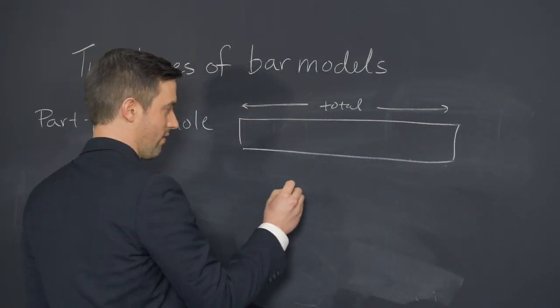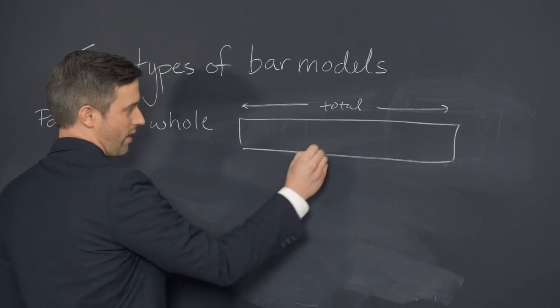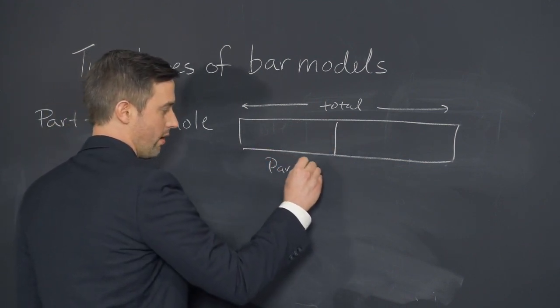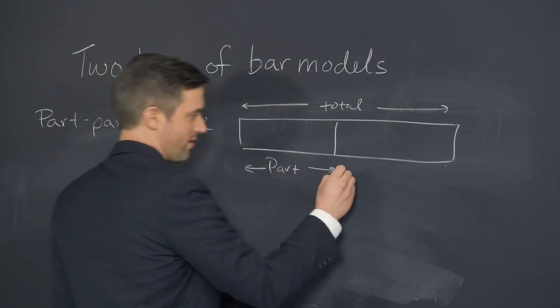An arrow is indicating the length of that total or the quantity amount, and then we have it broken into two separate pieces, the part and the other part. You can have more than two parts however.